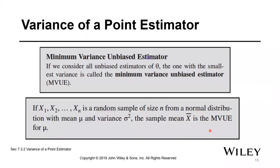The minimum variance unbiased estimator: if we consider all unbiased estimators of theta, the one with the smallest variance is called the minimum variance unbiased estimator (MVUE). If we have n X-values in a random sample of size n from a normal distribution with a known mean and variance, the sample mean is the MVUE. In English, that means our mean for any normal distribution should be the minimum variance unbiased estimator, because there's a chance that you have a variance of zero — not likely, but possible.